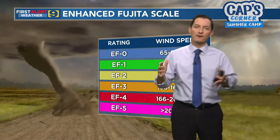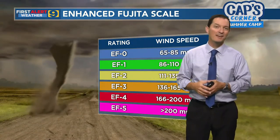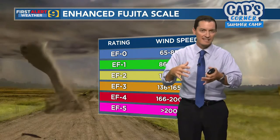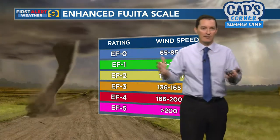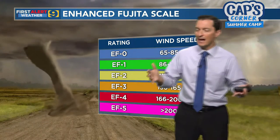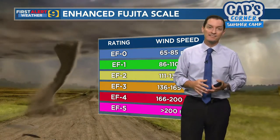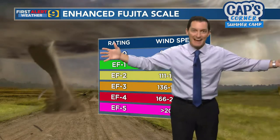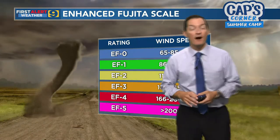One of the differences between tornadoes and hurricanes is that our strongest tornadoes can have winds that are higher and faster than our strongest hurricanes. Another major difference is that tornadoes are much smaller in size. The biggest tornadoes are a mile or two wide, while the clouds and rains associated with a hurricane can sometimes be up to 1,000 miles wide.